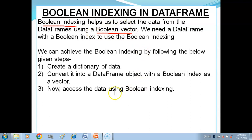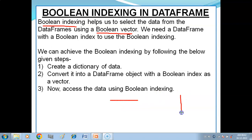What is a boolean vector? A boolean vector is a list of values which you can arrange in row form or column form. The values are in boolean form — true and false.